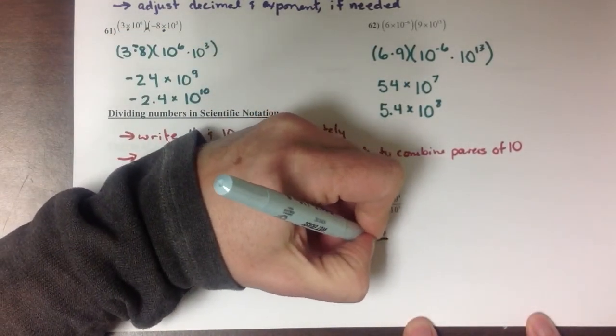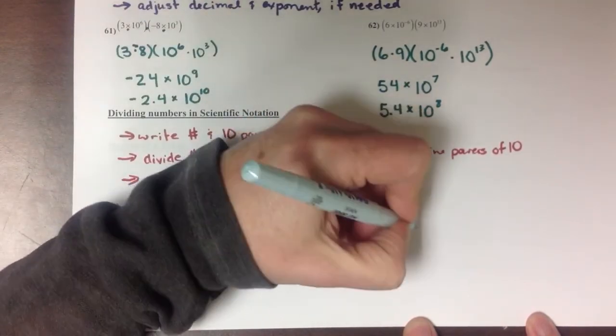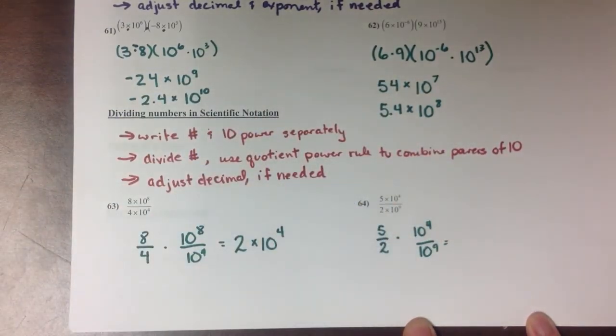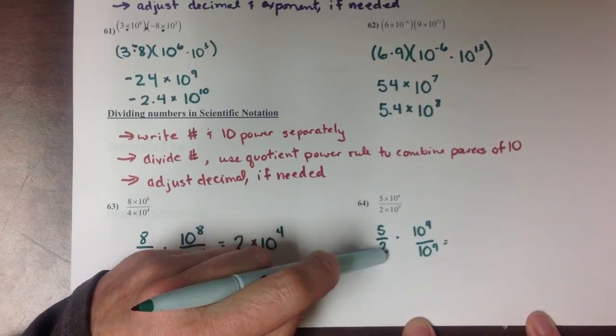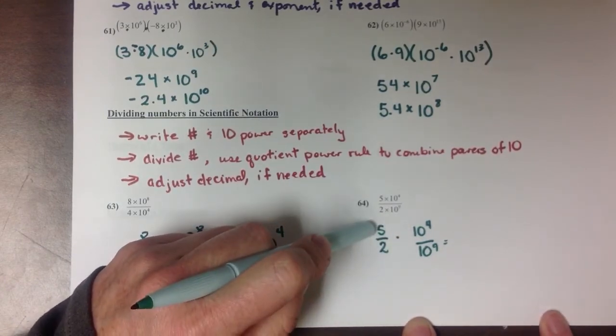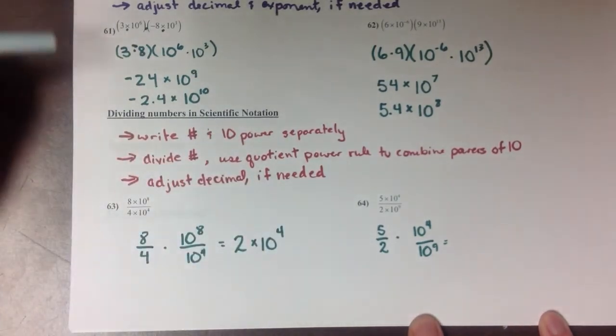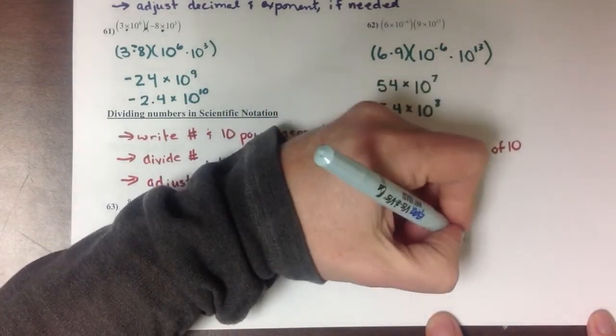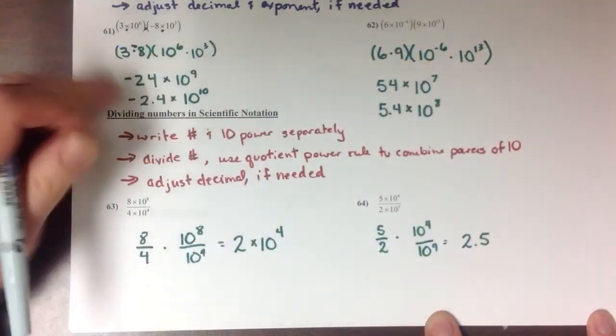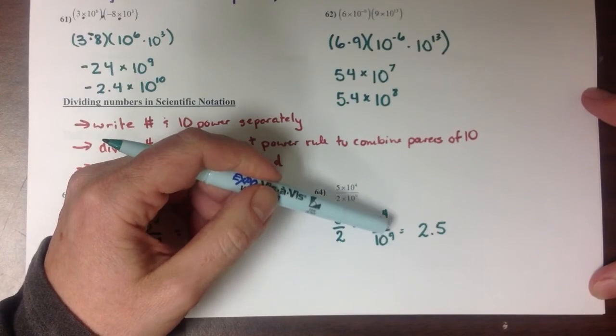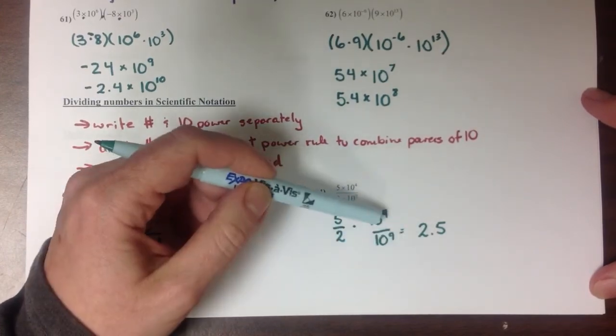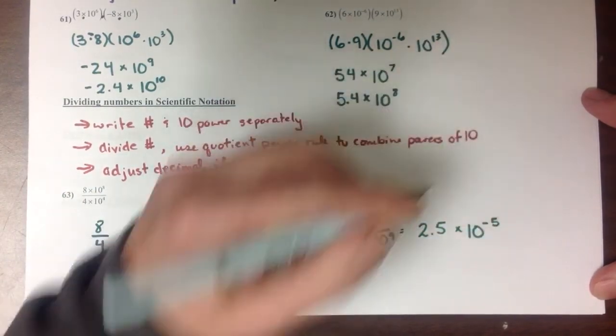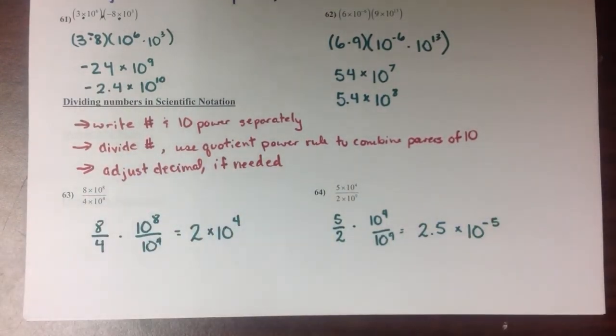Looking at this one, 5 over 2 times 10 to the 4 over 10 to the 9. 5 divided by 2. Usually we've been leaving these fractions improper rather than doing the division, but in scientific notation, you'll notice that the number portion is always written as a decimal. So we do want to go ahead and rewrite this 5 halves in its decimal form, which is going to be 2.5. Then, 10 to the 4 divided by 10 to the 9, is 10 to the 4 minus 9. So our final answer is going to be 2.5 times 10 to the negative 5th.